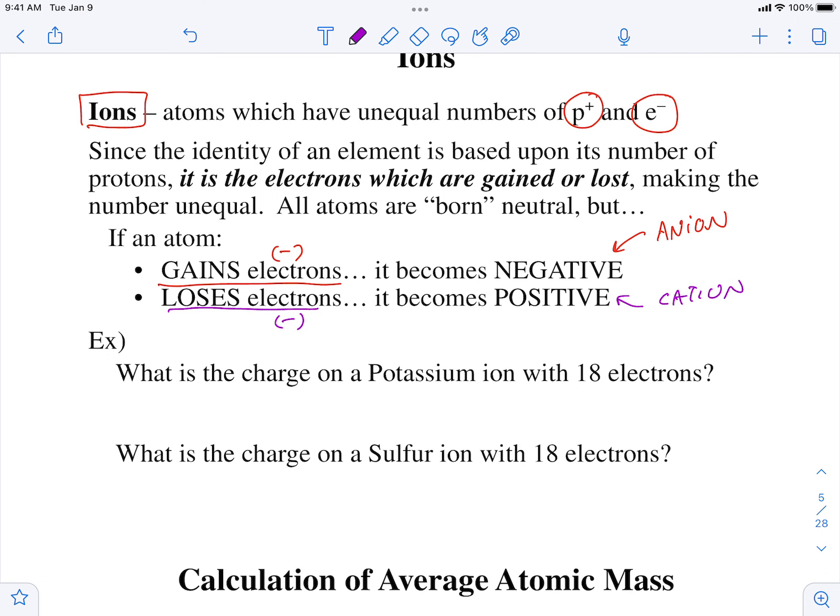If something loses a negative, it ends up being positive. And that's what we call a cation. And you can remember this because think about what you know about cats. Cats are positive.